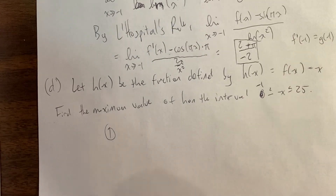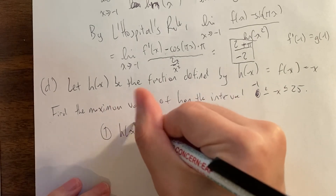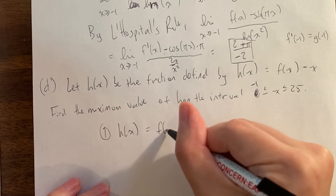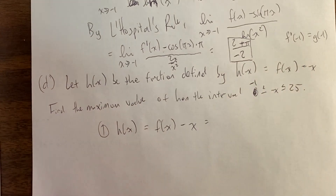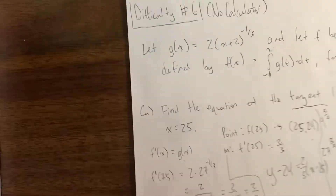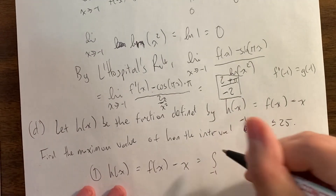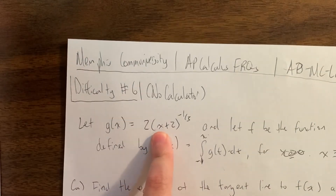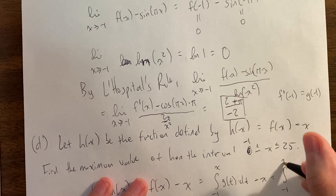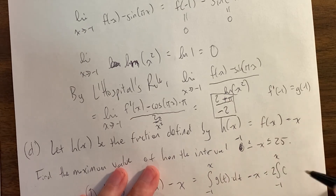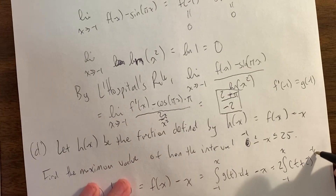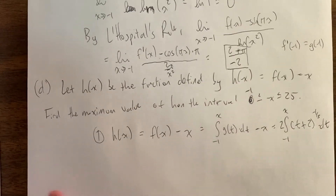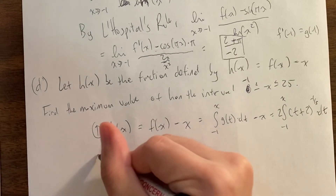In this case, we're going to do the closed interval method, which is three steps. The first step is pretty easy: rewrite the function because this is the function we're taking the max of. Let's rewrite h(x) = f(x) - x. f(x) is the integral from -1 to x of 2(t+2) to the negative one-third dt, minus x. Sometimes it doesn't match the given, which makes it harder, but in this case it does. The first step is just identifying the function you want to take the maximum of.